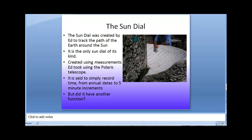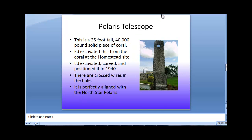This artifact is called the Sundial and was created by Ed to track the path of the Earth around the Sun. It is the only sundial of its kind and was created using measurements that he took using the Polaris Telescope, as I talked about in the video on the Polaris Telescope a few days ago.